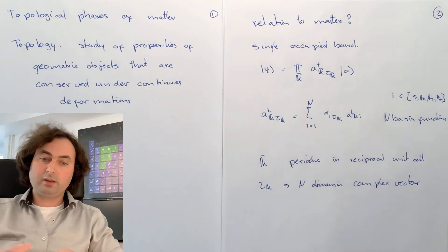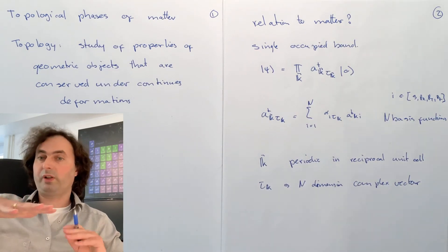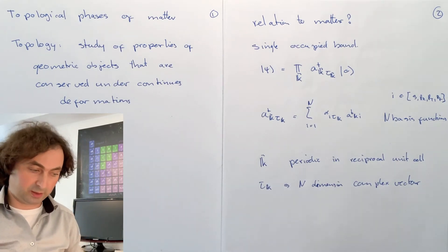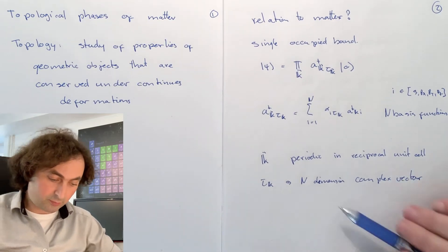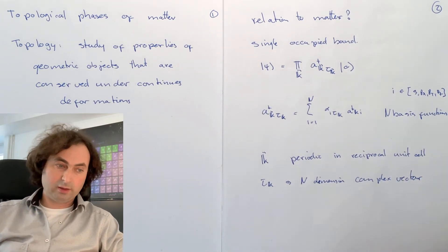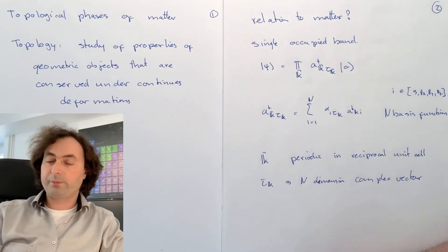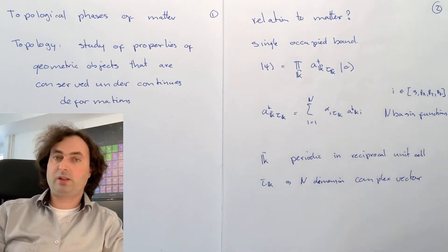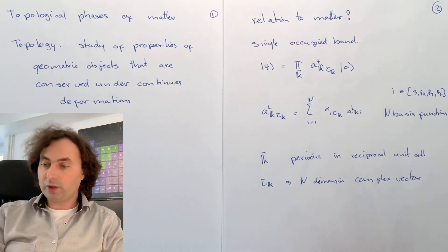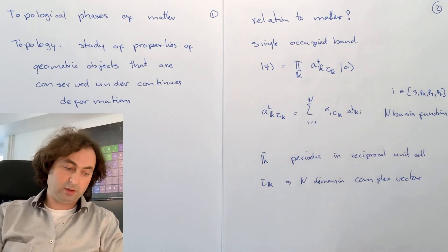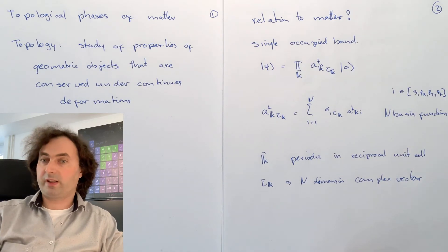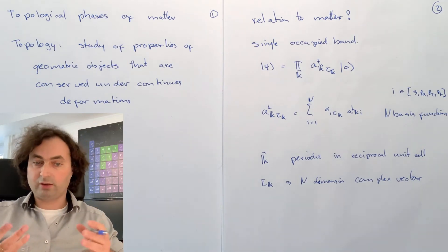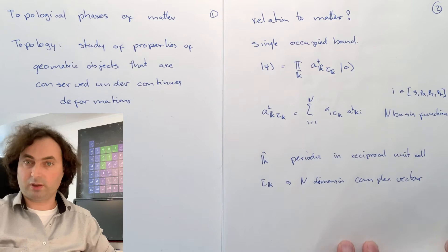In total, our wave function is just given as an n-dimensional complex vector on a periodic surface. For one-dimensional, that would be a ring. For two-dimensional, it's a surface periodic in two dimensions, which is the surface of a donut. And for three dimensions, you have a three-dimensional periodic structure. This vector on a ring or on a surface that is periodic can have different topologies, and with that we can distinguish different phases of matter by the topology of the wave function as an n-dimensional complex vector in a Hilbert space for the different k-points, depending on whether we have a one-, two-, or three-dimensional system.